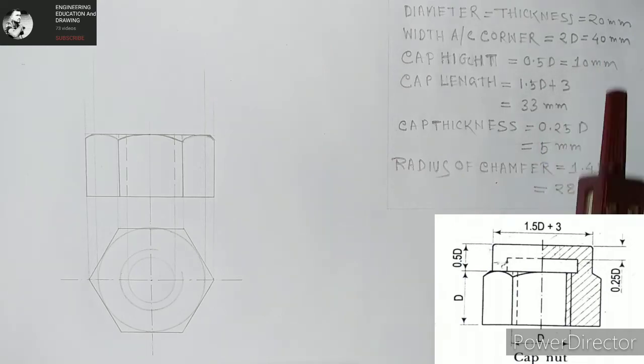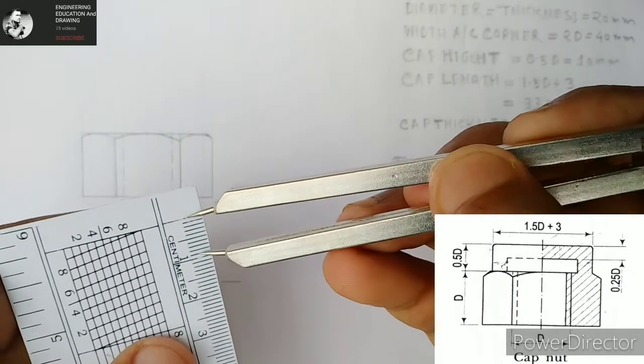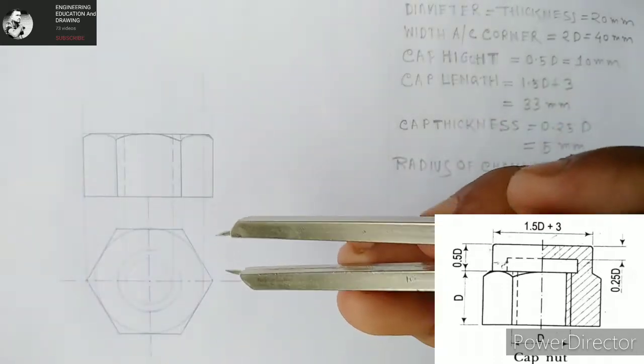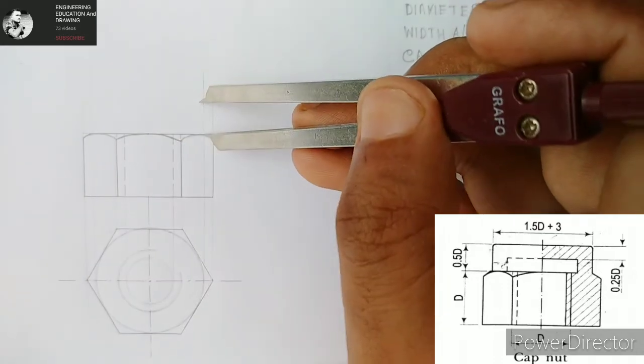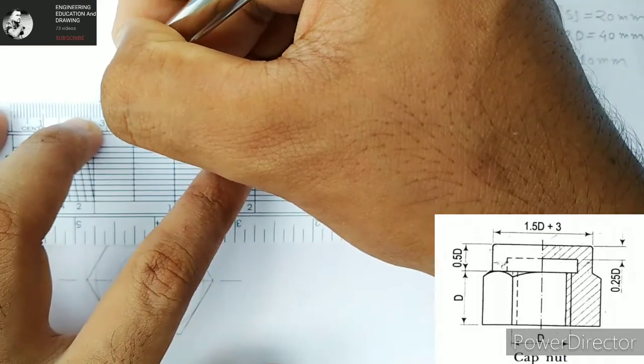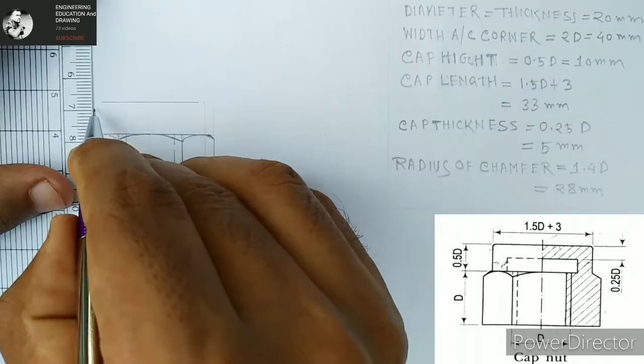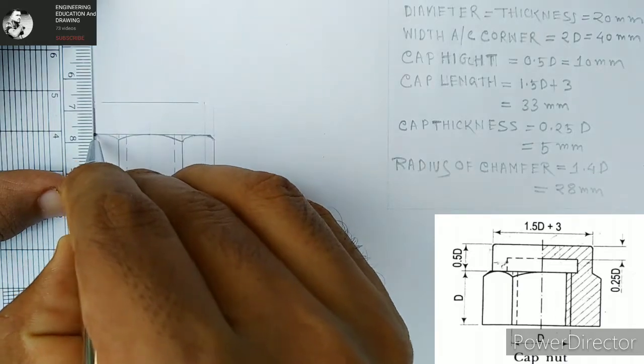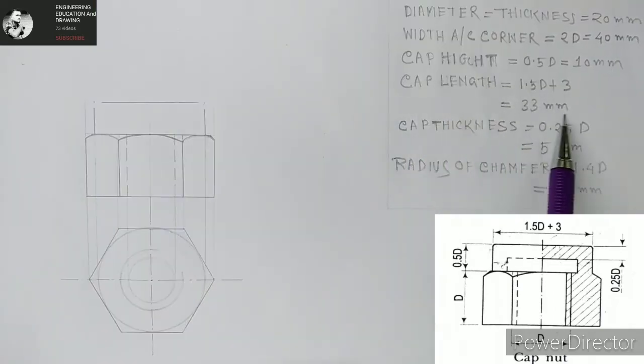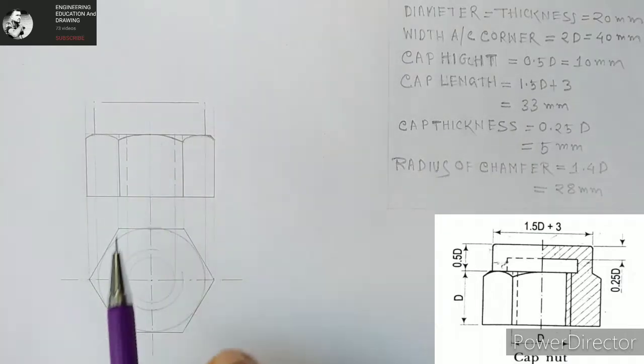Now what we are going to do is take 10 millimeters. Now we are going to make the cap. The cap height we know, so we are making this. The cap length is, we know, 33 millimeters. So here to here is 33 millimeters as we have projected the points.